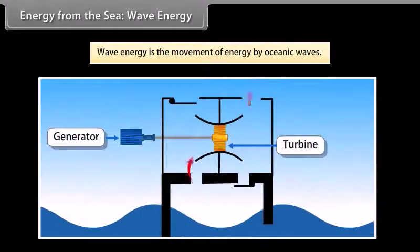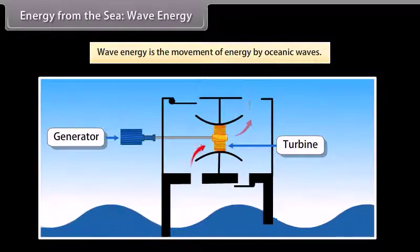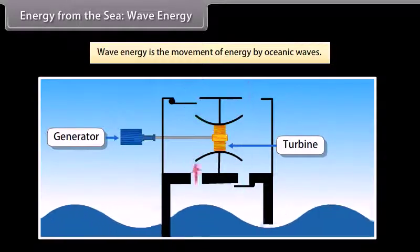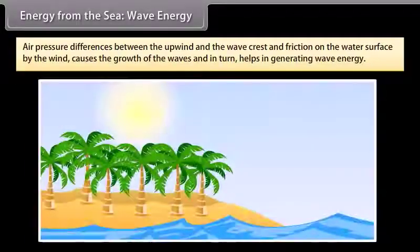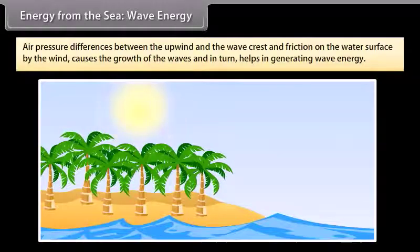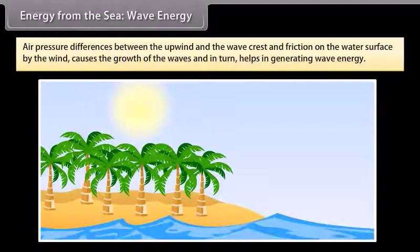Energy from the sea: Wave energy. Wave energy is the generation of energy by oceanic waves. We can capture this energy to do useful work, for example, electricity generation, water desalination, or the pumping of water into reservoirs. Waves are generated by wind passing over the surface of the ocean. As long as the waves move slower than the wind speed above the waves, there is an energy transfer from the wind to the waves. Both air pressure differences between the upwind and the wave crest, as well as friction on the water surface by the wind, makes the water undergo shear stress that causes the growth of the waves and in turn helps in generating wave energy.